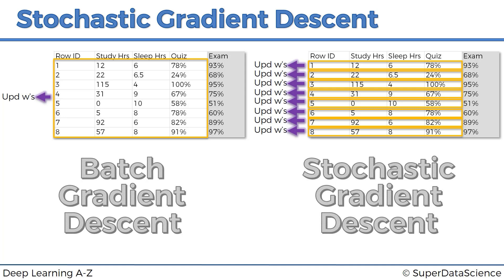The other advantage of stochastic gradient descent compared to batch gradient descent is that it's actually faster. The first impression might be that because it's doing every single row one at a time it is slower, but actually it is faster because it doesn't have to load all the data into memory and wait until all rows are run together. You can just run them one by one, so it's a much lighter and faster algorithm.